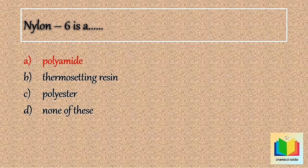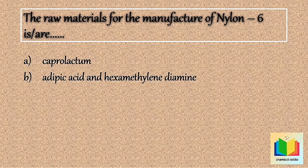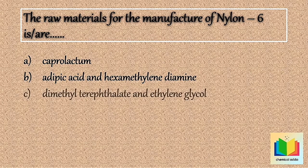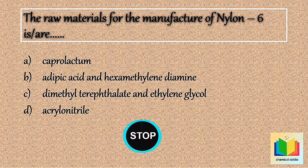Next question: The raw materials for the manufacture of Nylon 6 is — . Option A: Caprolactam. Option B: Adipic acid and hexamethylene diamine. Option C: Dimethyl terephthalate and ethylene glycol. Option D: Acrylonitrile. [10 seconds] So the answer is Option A: Caprolactam.